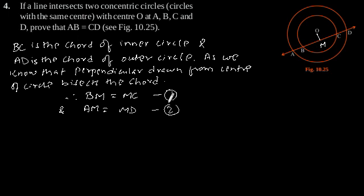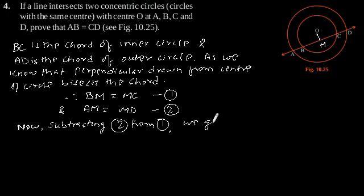Now subtracting equation 2 from equation 1 we will get AM minus BM is equal to MD minus MC, which implies AB is equal to CD as proved.